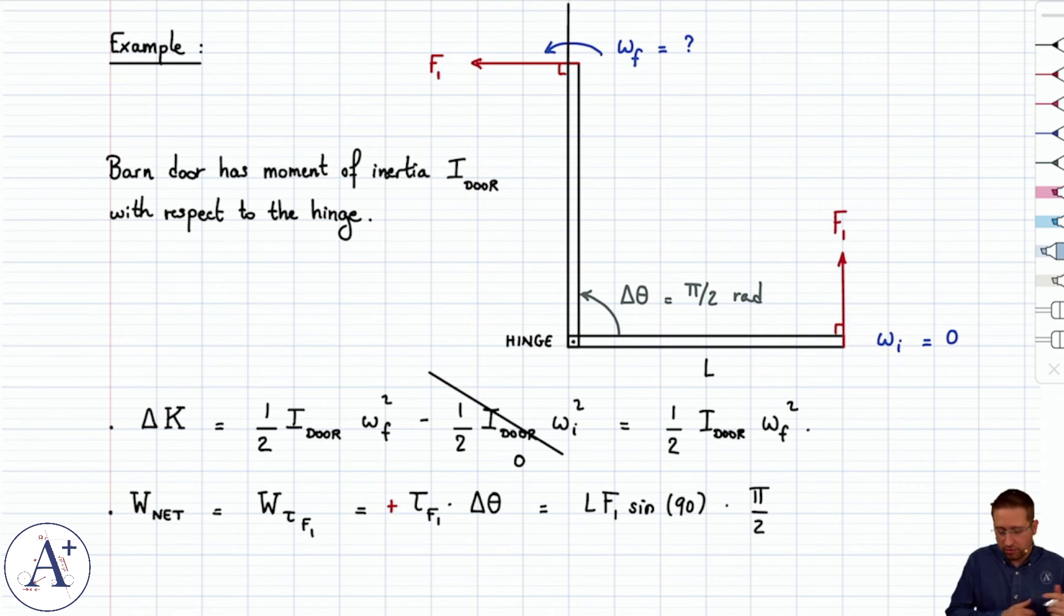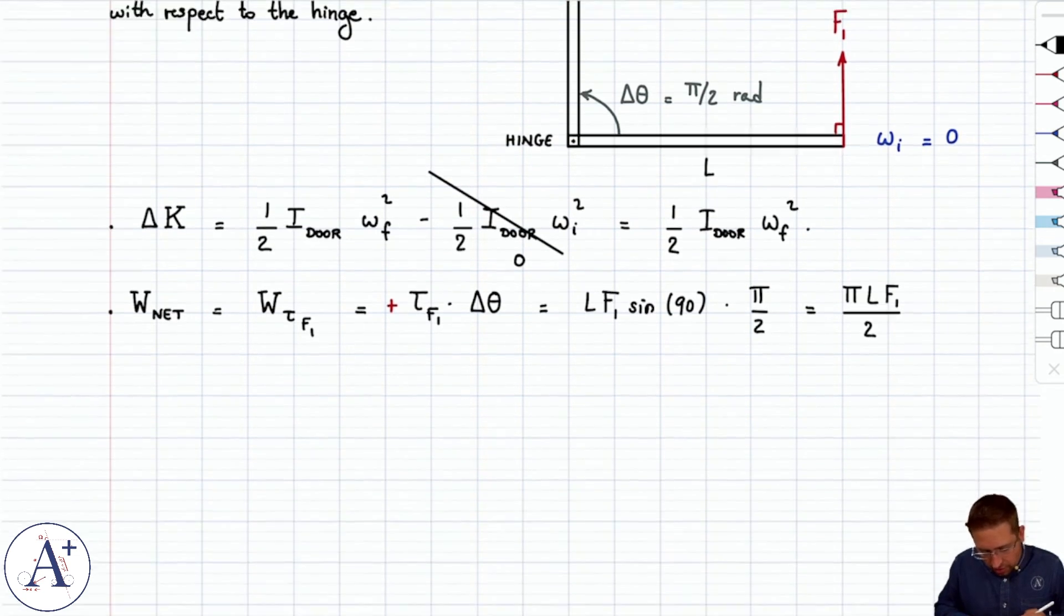If it makes more sense, just do everything in radians. I know when it comes to sine and cosine, a lot of you prefer degrees, but one way or the other, what you get here is pi L F1 over 2. These two quantities are equal by the work-kinetic energy theorem.